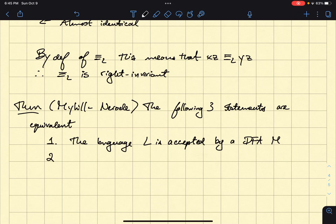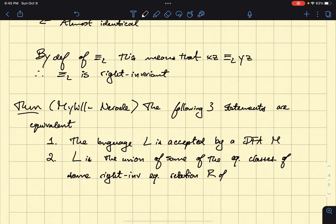And then, so one if and only if two, where two is L is the union of some of the equivalence classes of some right invariant equivalence relation R of finite index.